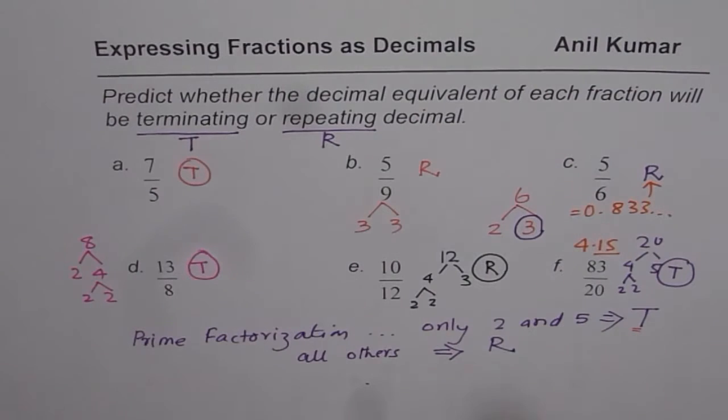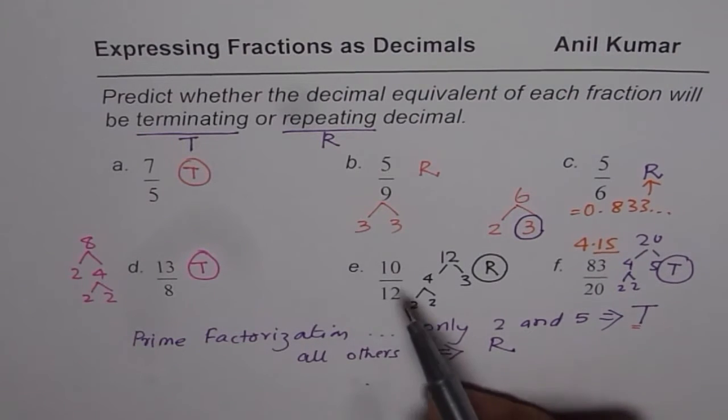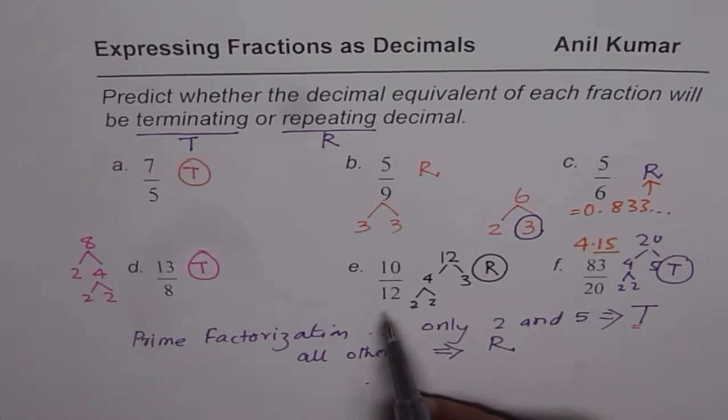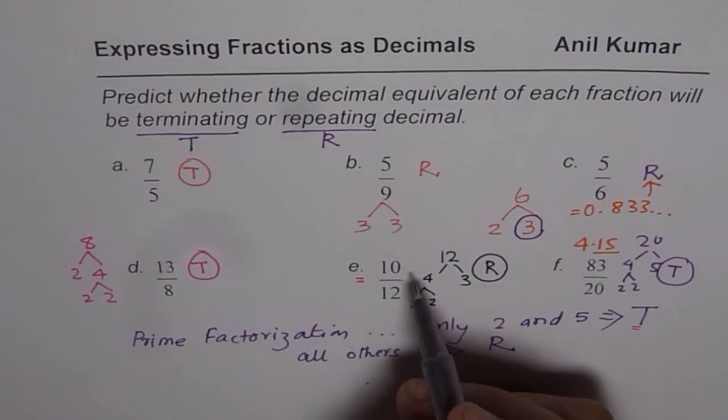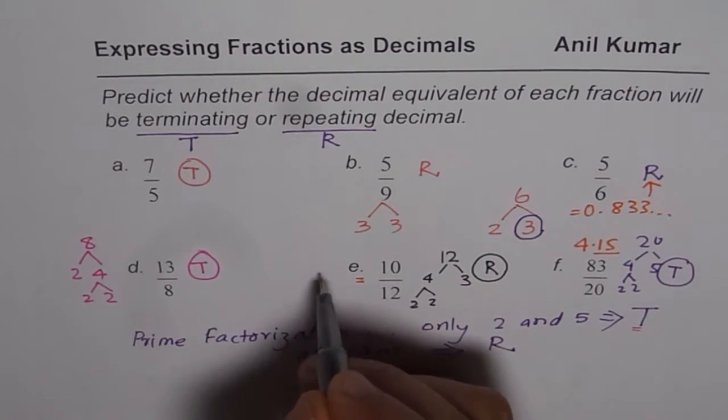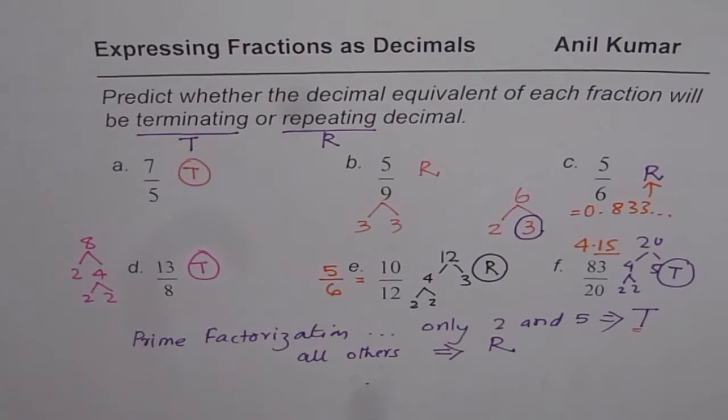And the key here is that you need to check the denominator. There is one more important thing. When we have common factors, we should simplify first. So 10 over 12 will simplify. It could be written as dividing both by 2, 5 over 6. Do you see that? So at times, you need to simplify and then factor. So this is very important.